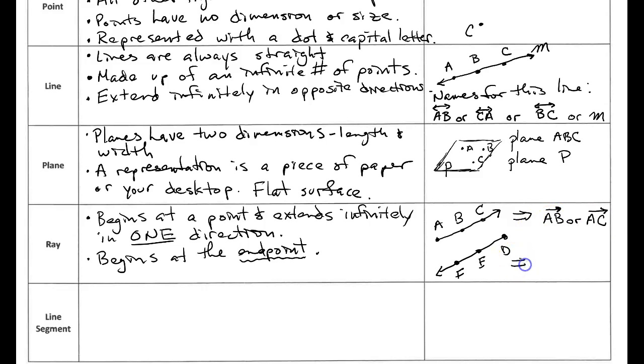Now let's take a look at this one. This one starts at D. So I'm going to call this ray DE. Notice my ray symbol always looks the same. Even though this ray is pointing to the left in my picture the ray symbol stays the same no matter what it looks like. Or I could call it ray DF.